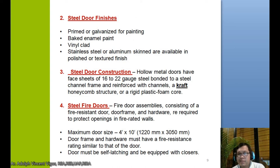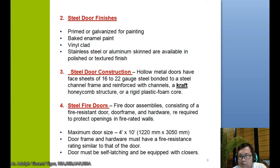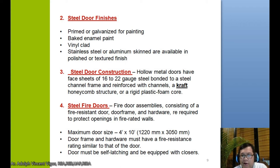Steel doors are finished with primer or galvanized coating for painting, baked enamel paint, liner cladding, or stainless steel or aluminum skins in polished or textured finish. For steel door construction, hollow metal doors have face sheets of 16 to 22 gauge steel bonded to a steel channel frame and reinforced with channels, a kraft honeycomb structure, or a rigid plastic foam core. Steel fire doors are fire assemblies consisting of a fire-rated door, door frame, and hardware. The maximum door size is around 1.20 by 3 meters. The door frame hardware must have a fire-resistance rating similar to the door, and the door must be self-latching and equipped with closers.